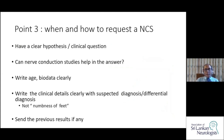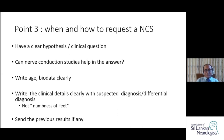When and how to request nerve conduction studies — this is a very important and sensitive area. There should be a clear clinical hypothesis. If you are not certain what you are trying to sort out, don't request neurophysiology. First, sort out what clinical question you have when seeing this patient, then ask yourself whether nerve conduction studies can help answer it. Age and bio data are very important and should be mentioned clearly, as some parameters may change with age. Always write clinical details with the suspected or differential diagnosis.